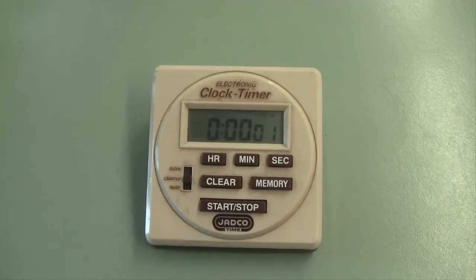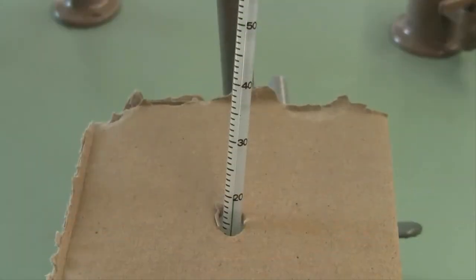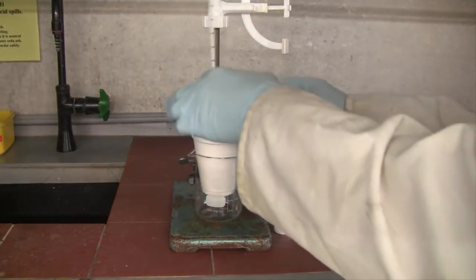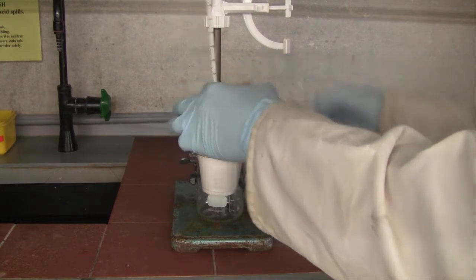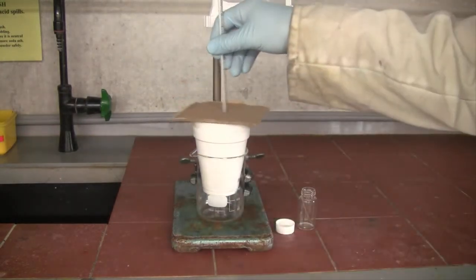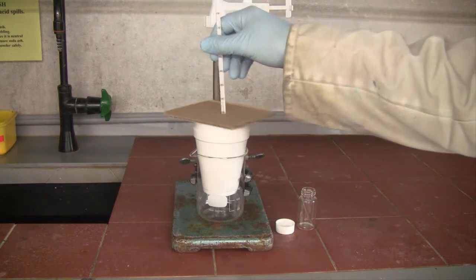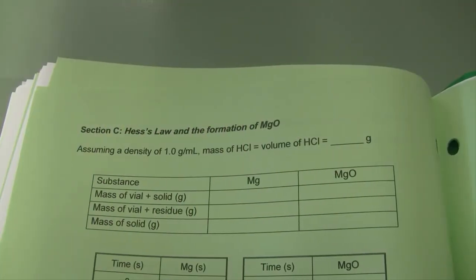Once you're set up, you can start your reaction timer, and when it reaches 30 seconds, make sure the initial temperature is constant and then add your magnesium metal to your acid. Be sure to mix thoroughly, you want to make sure all the magnesium metal reacts, and keep your weighing vial aside. You're going to need to go back to the analytical balance and weigh it again, so that you can determine the exact mass of solid magnesium you've added.